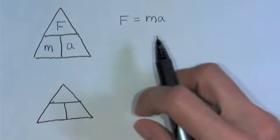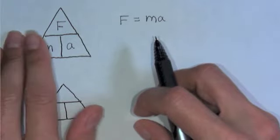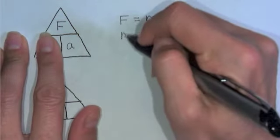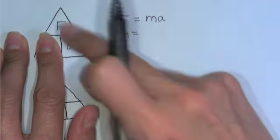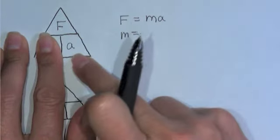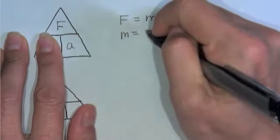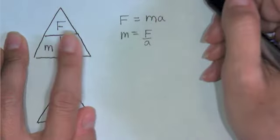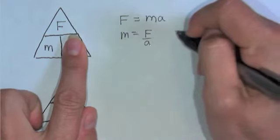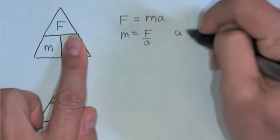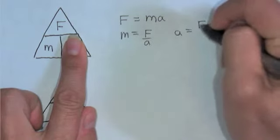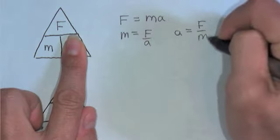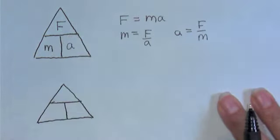And another example is if we cover M, which means we're looking for M, that gives us F divided by A, F over A. And if we cover A, which means we're looking for A, that gives us F divided by M. And so that's how this triangle works.